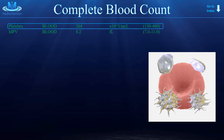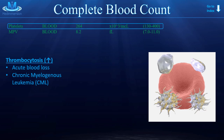Now, what could cause thrombocytosis — an increased number of platelets in the blood? How about acute blood loss? Our body can sense acute blood loss and react by releasing more stored thrombocytes from the spleen, which acts as a reservoir. Chronic myelogenous leukemia is another one. Iron deficiency can actually cause thrombocytosis. Polycythemia vera, and hyposplenism — meaning either you're missing a spleen or your spleen is working improperly.